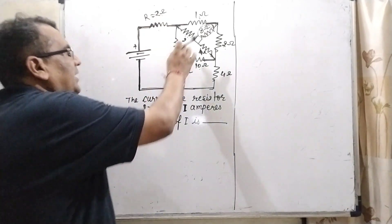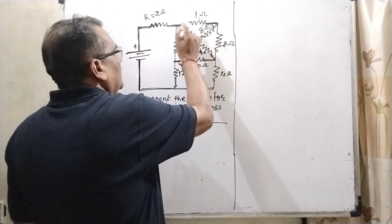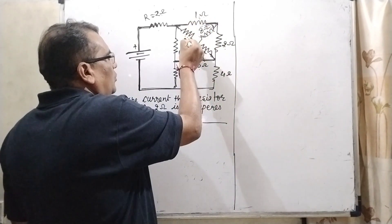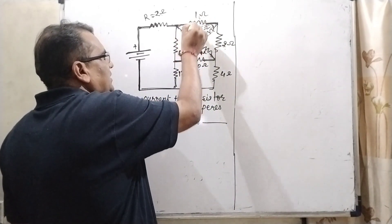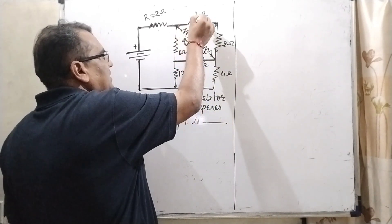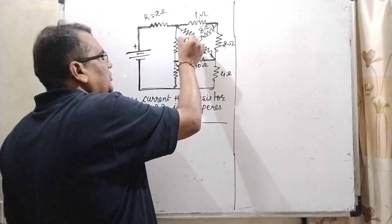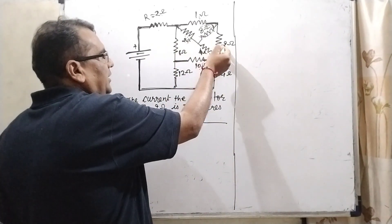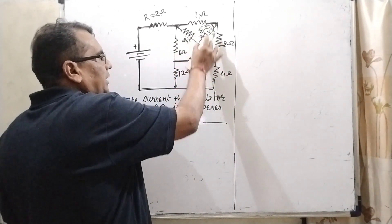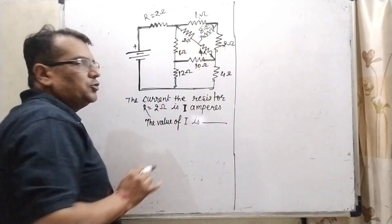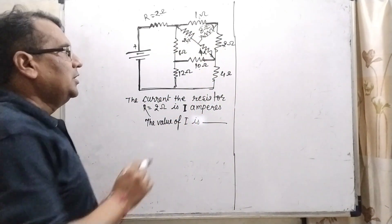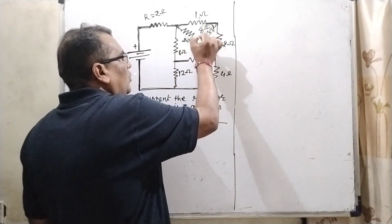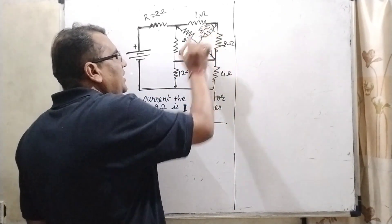You can see that here 1 ohm and 2 ohm — the adjacent sides have resistances in the ratio 1:2, and it is also 1:2 on the other side. So it is in a Wheatstone bridge arrangement, and therefore the 8 ohm resistance can be neglected.